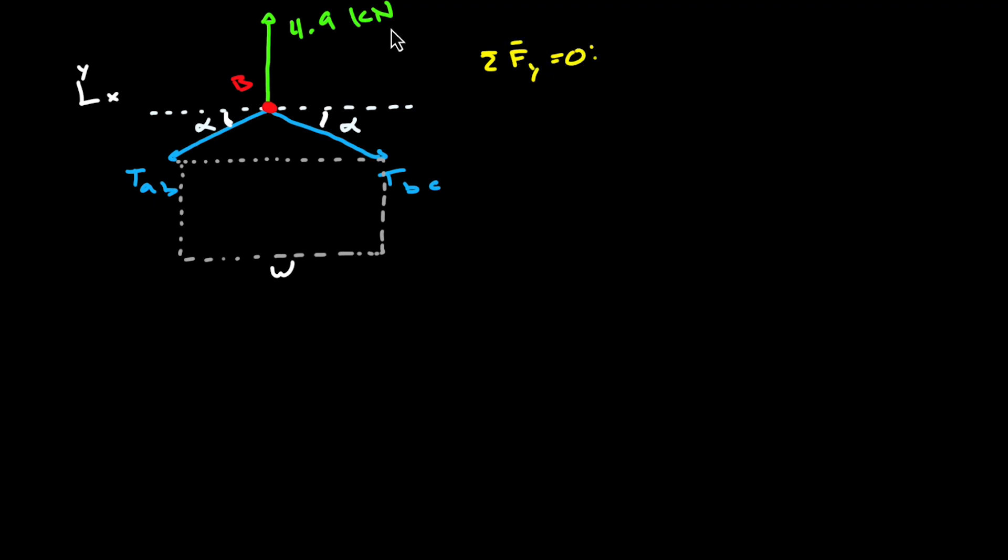Okay so just like before we got to do our sum of forces in the y direction. Now we're not looking at 100 newtons pulling up but rather 4.9 kilonewtons pulling in the upward direction. And in the downward direction again we've still got two vertical components one that comes from each side of this cable. And just like before the vertical component is just the tension in the cable multiplied by sine of that angle alpha.